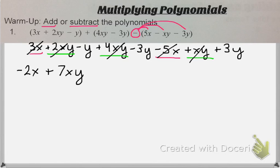And then let's look at our y values. I have negative 1y, negative 3y, and positive 3y. These two cancel out, so I'm just left with negative y.